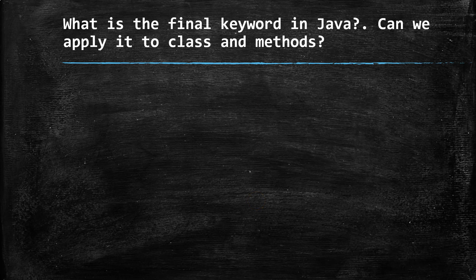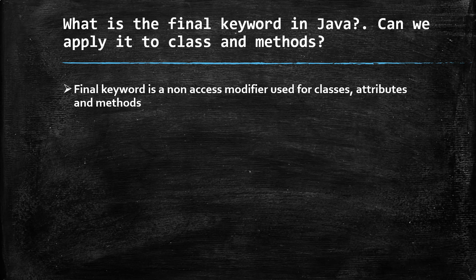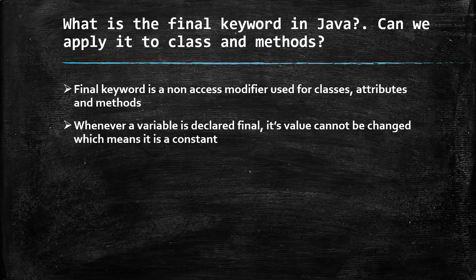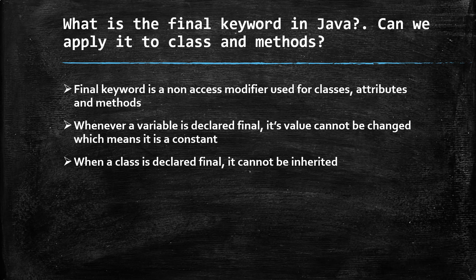Our first Java question is: what is the final keyword in Java, and can we apply it to classes and methods? The final keyword is a non-access modifier used for classes, attributes, and methods — so it can be applied to both. You may also get follow-up questions on why we use it. If we declare a variable as final, its value cannot be changed, making it a constant. For a class declared final, it cannot be inherited by another class.